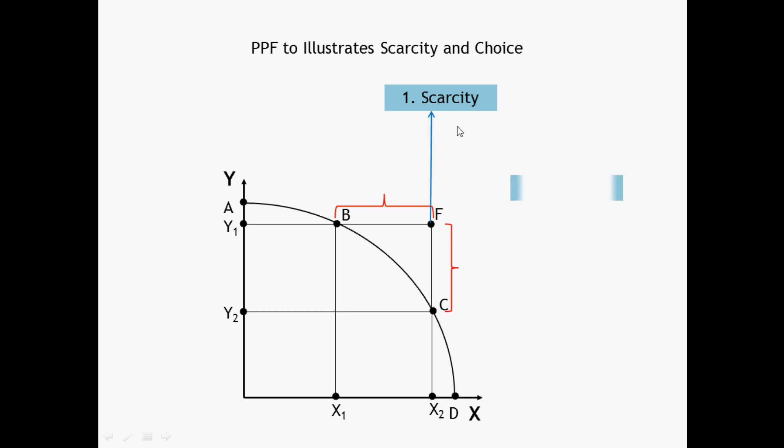What about choice? Along the production possibility frontier there are so many combinations of two goods X and Y. At point A, we are using all of our resources to produce Y only.